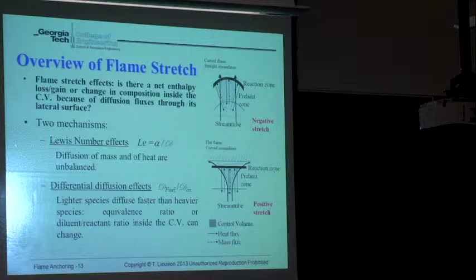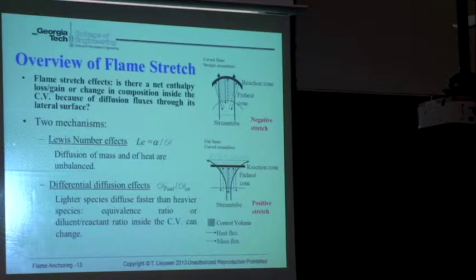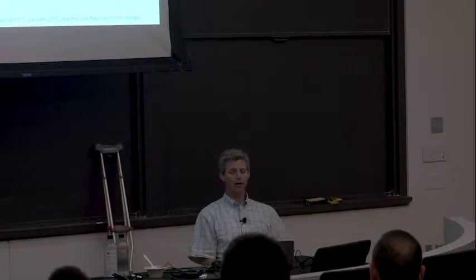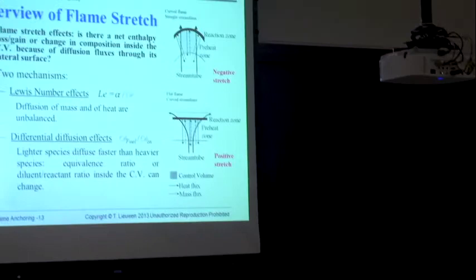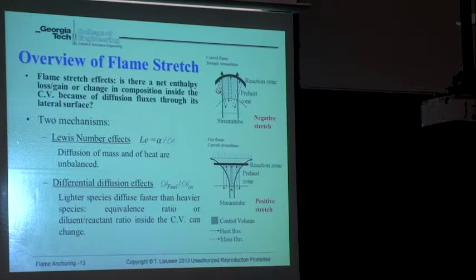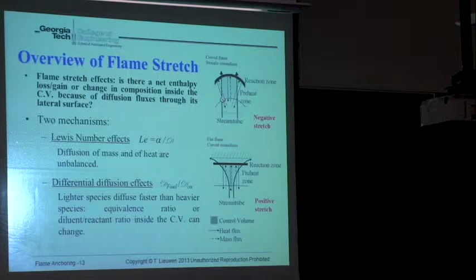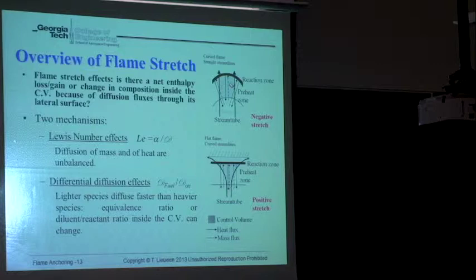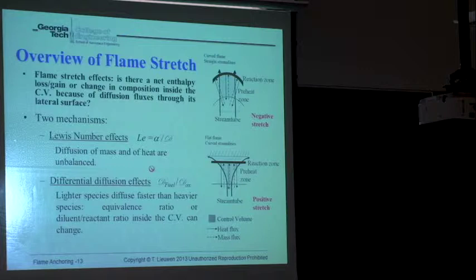The effect depends on your starting equivalence ratio. If you start lean and make the mixture leaner, local flame temperature drops. If you start rich at equivalence ratio three and reduce it toward stoichiometry, that's beneficial. So this differential diffusion effect depends on whether the fuel is lighter or heavier than air, whether you're globally lean or rich, and whether you have positive or negative stretch. For a negatively stretched propane-air mixture, the equivalence ratio increases — beneficial if lean, detrimental if rich.